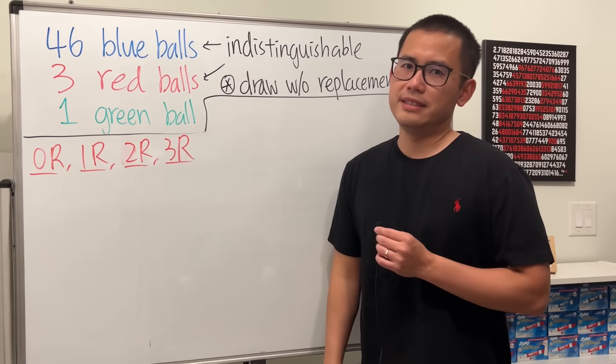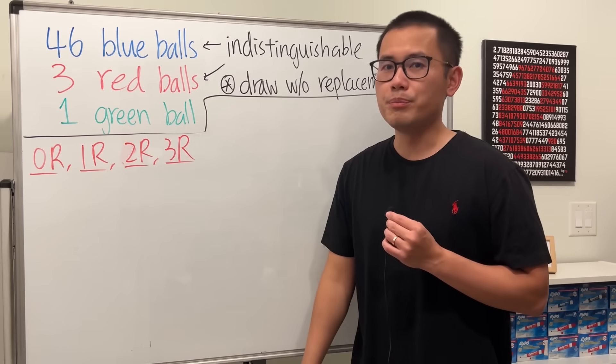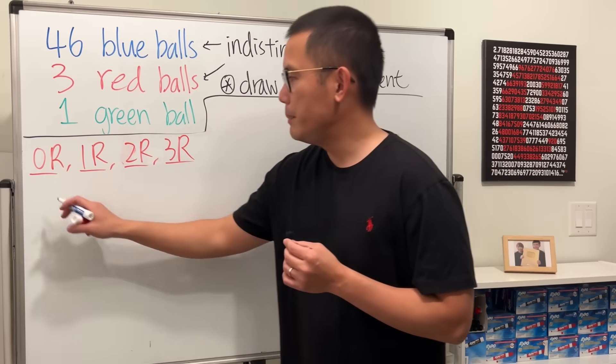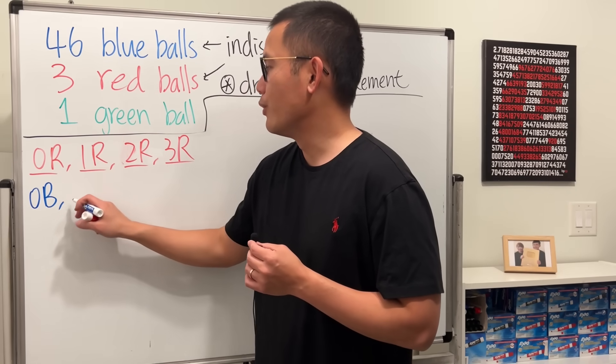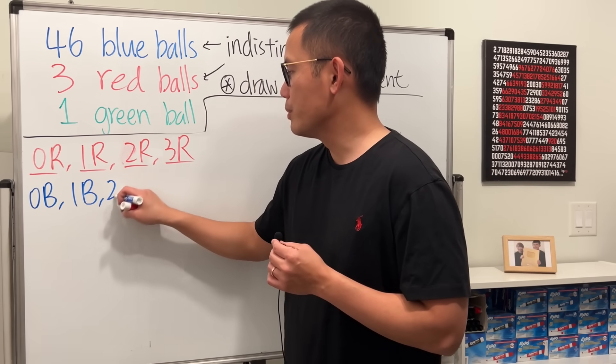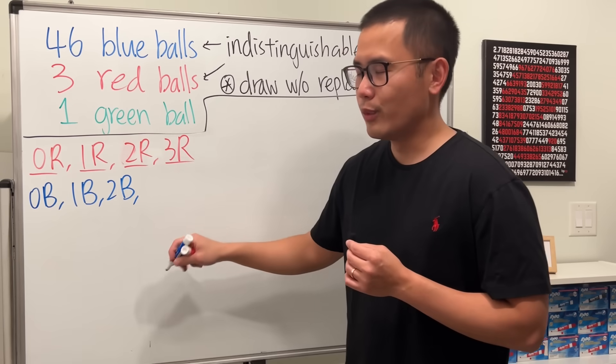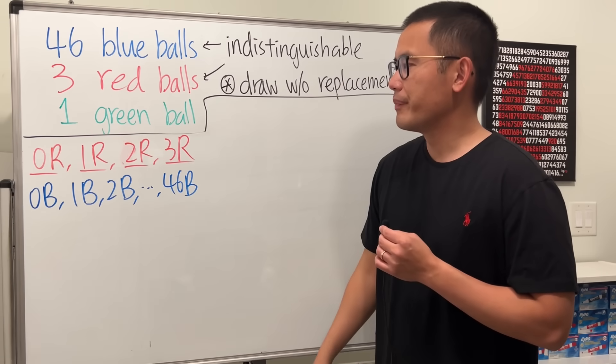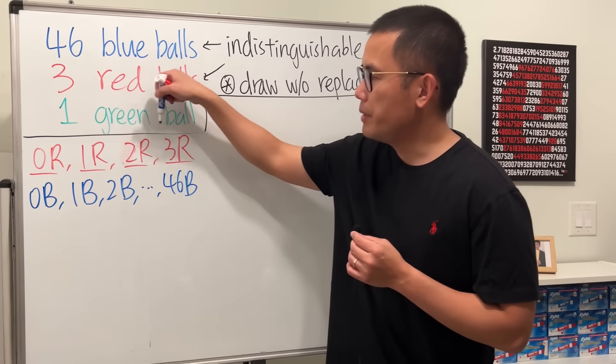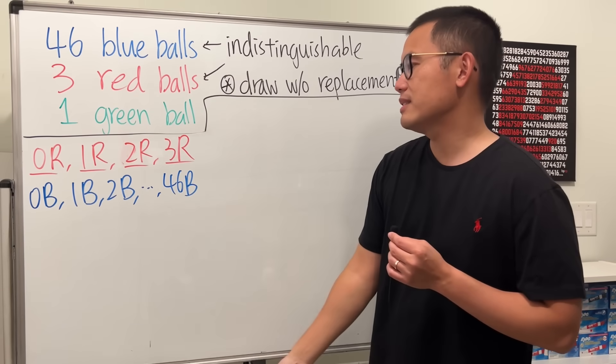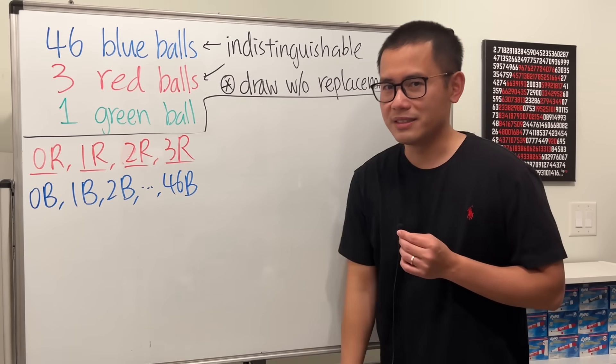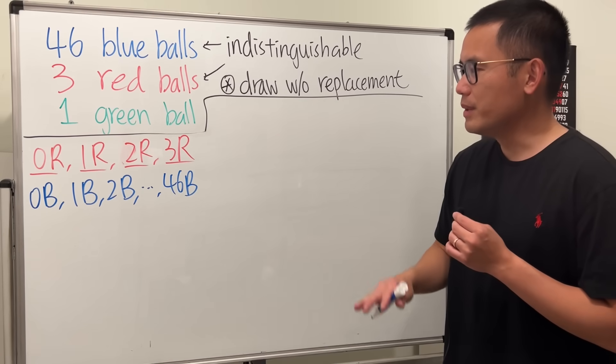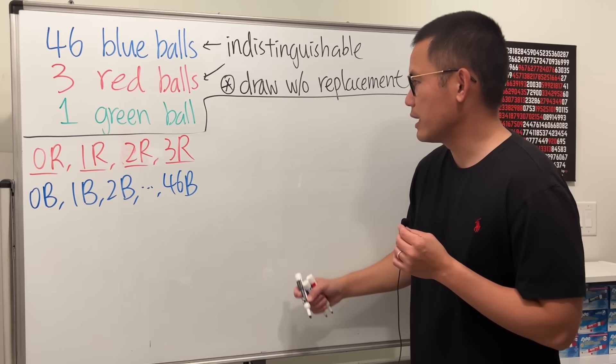But in each case, we have to consider how many blue balls are we going to see. Maybe we could have 0 blue, or maybe 1 blue, 2 blue, and then all the way up to 46 blue balls. So as you can see, we have 4 big cases. And in each big case, we have 47 small cases to consider. So to make this super clear, I'm going to do the following for you guys.